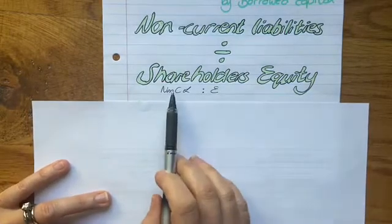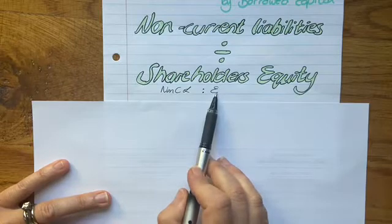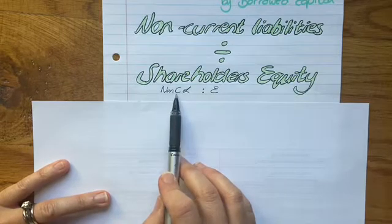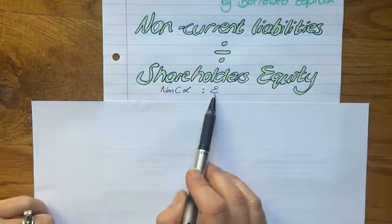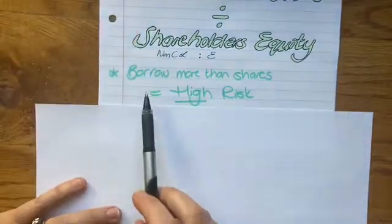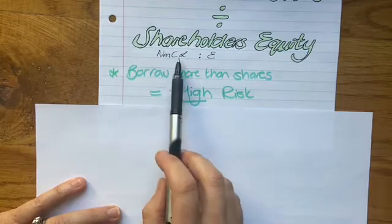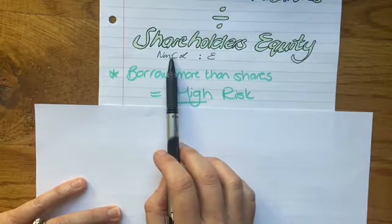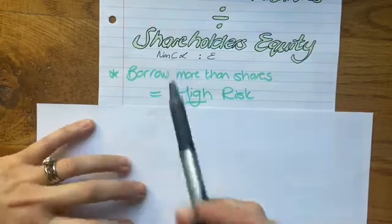So the opposite will be high risk when your money that you borrow is the highest. You look at your answer—let's say your answer is 0.2 to one. That means your liabilities on the left are quite low. This is a low-risk business.